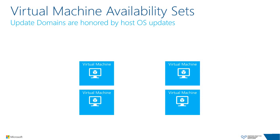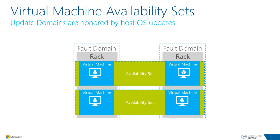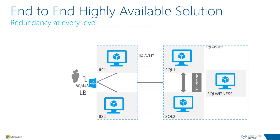Another important topic involves high availability. When deploying multiple virtual machines for the same workload — such as web servers or domain controllers — it is highly suggested to create them in an availability set. This tells Windows Azure to put the servers on separate physical racks so they have physical redundancy at the server, power, and network level. If a failure at the rack level occurs, at least half of your servers remain available. To achieve the 99.95% SLA, availability sets are required.